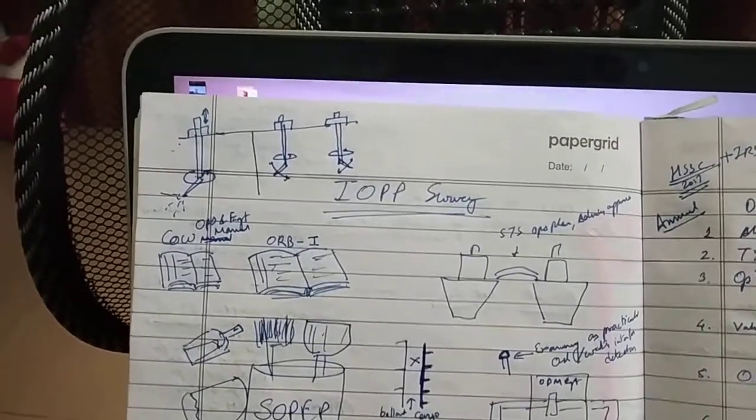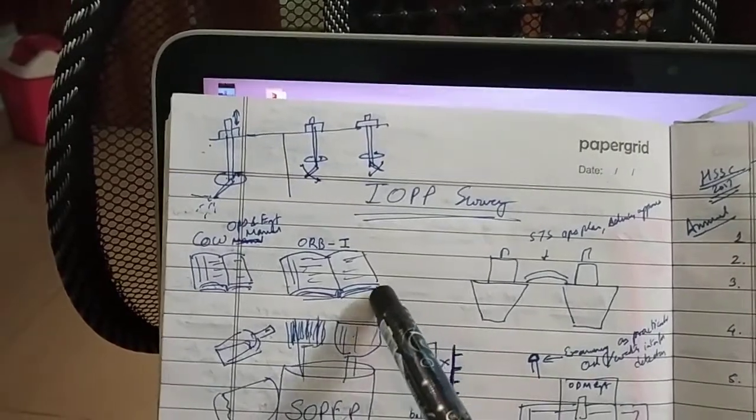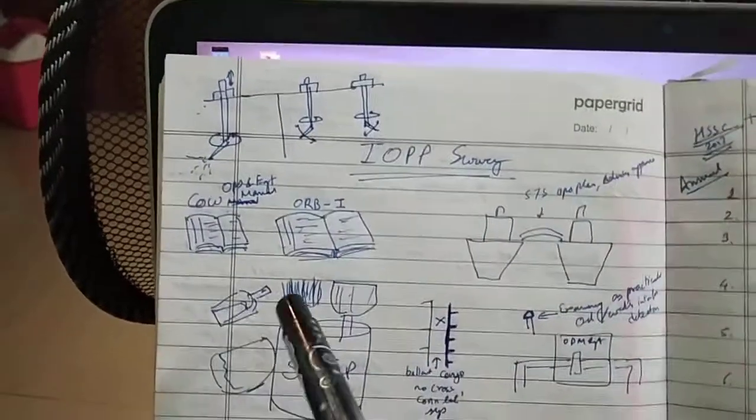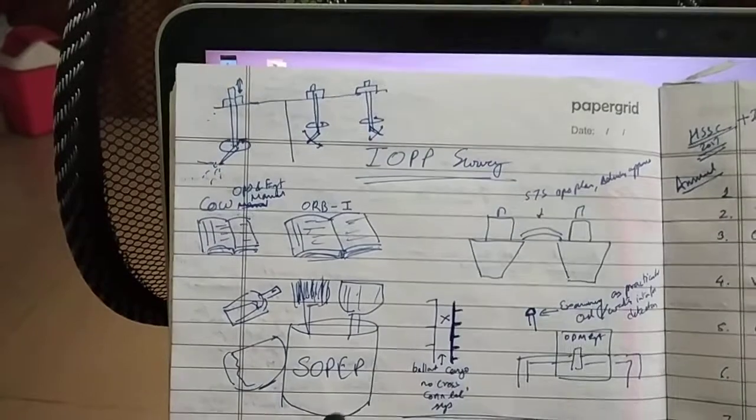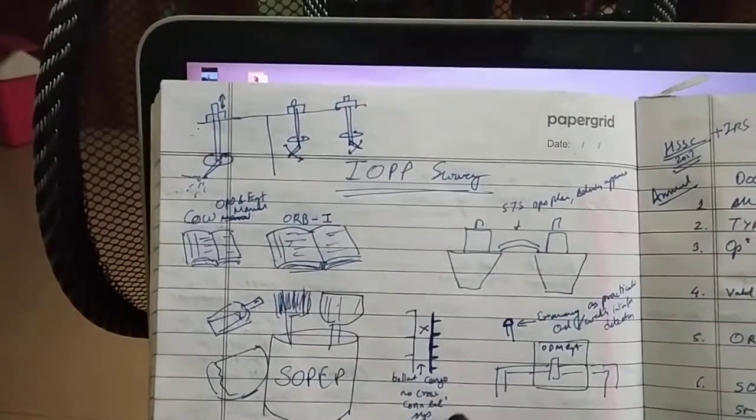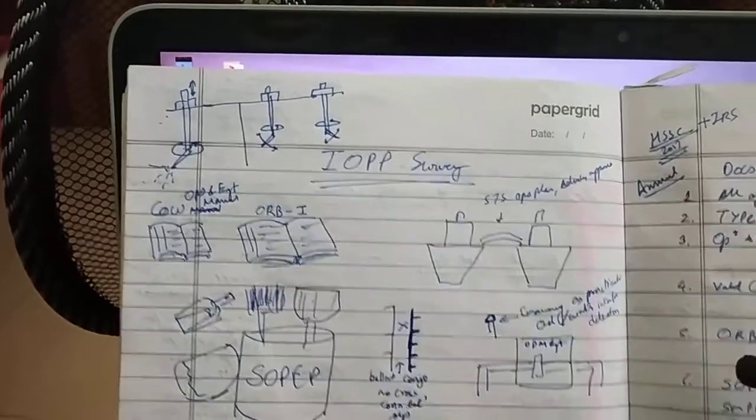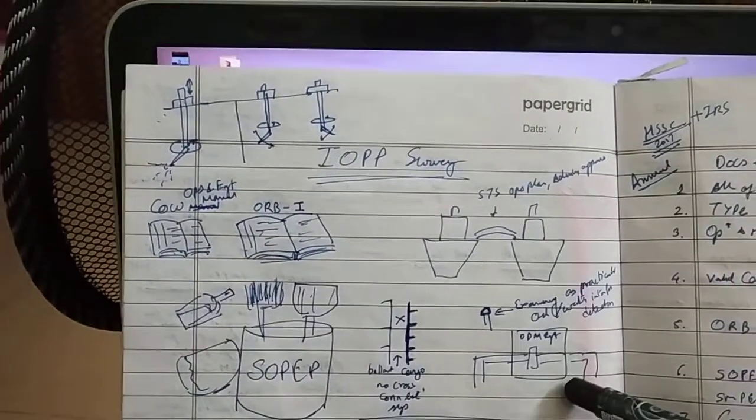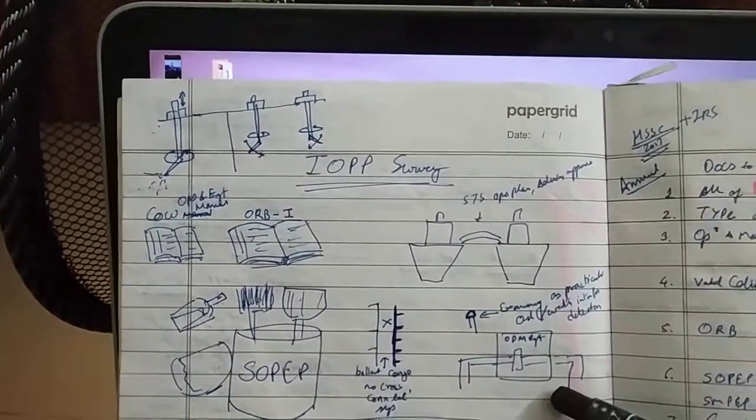Your COW operation and equipment manual, talk about the ORB part 1, the SOAP equipment. Also talk about the ballast in the cargo line - there should be no cross connection between them - and give some points about ODME.